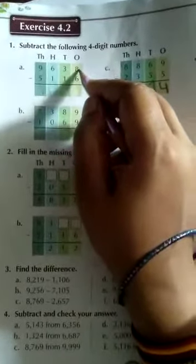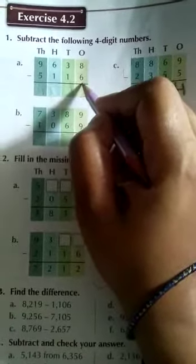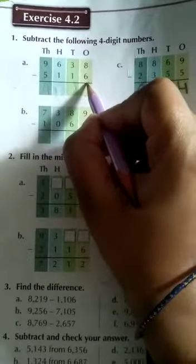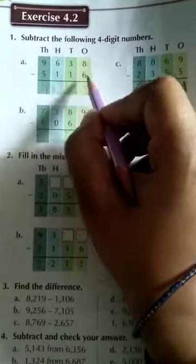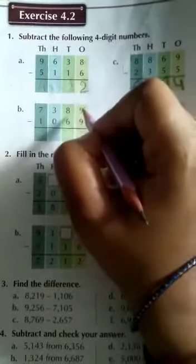Now you see in 1s place what given students? It is given 8 and below given 6, so 8 is greater than 6 or 8 is smaller than 6? 8 is greater than 6, now you subtract 8 minus 6. 8 minus 6 is how much? 2.